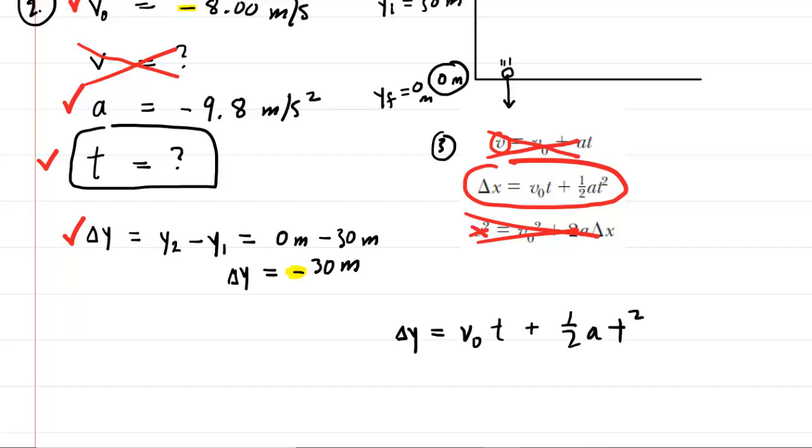And then we'll fill in our known values. So the displacement was negative 30. We're going to omit units for the clarity of the algebra, but just keep in mind that the units should be technically plugged in. So we have negative 30 meters equals the initial velocity, which was the negative 8 meters per second, multiplied by the time which we are looking for, plus one-half times the acceleration of negative 9.8 times the time squared.